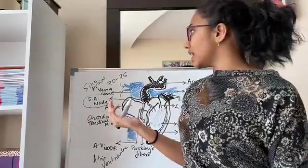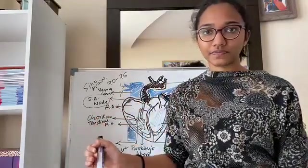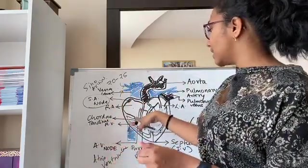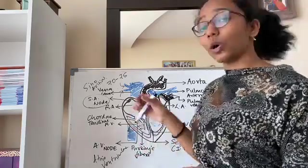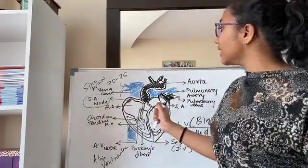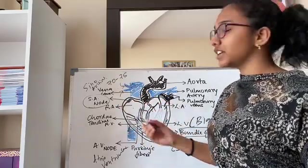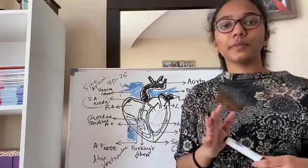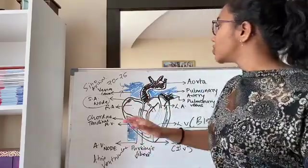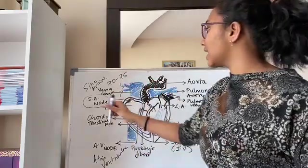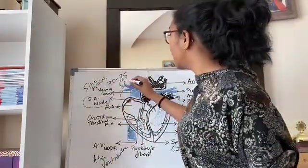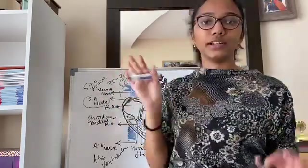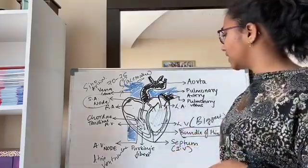These other nodes—AV node and Purkinje fibers—also generate action potential but it's not as much. For example, AV node generates about 40 to 45 beats per minute and these Purkinje fibers generate about 25 per minute. So the highest or the pacemaker of the heart is the sinoatrial node. Pacemaker of the heart is known as the sinoatrial node. This is about the entire anatomy of the heart.